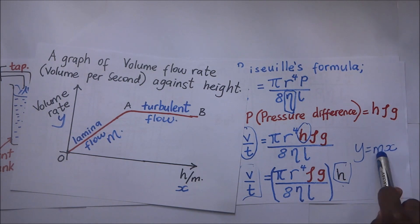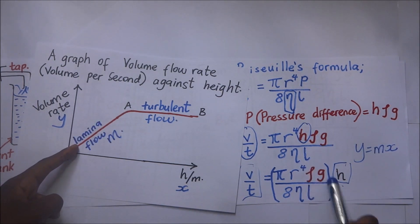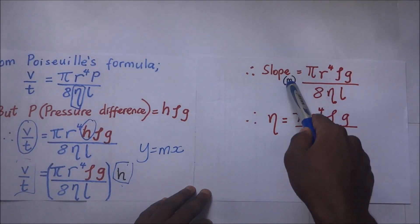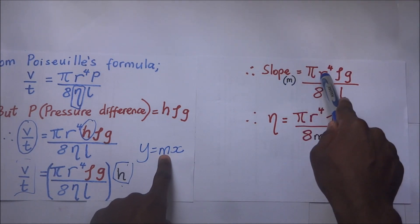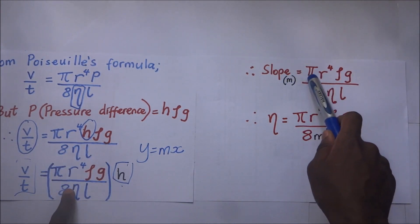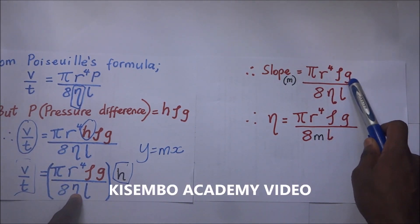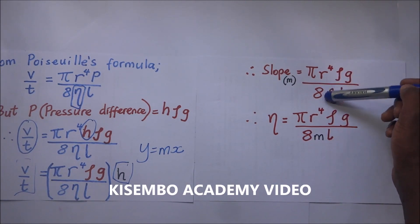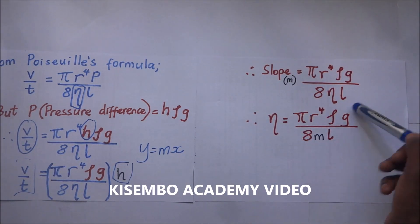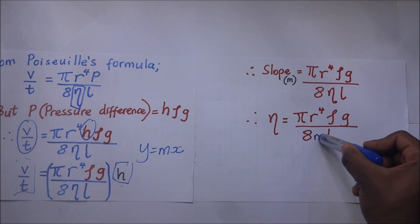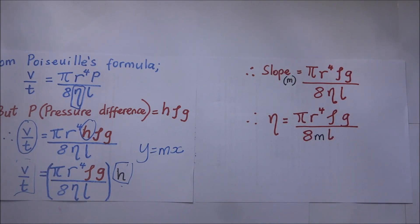So we equate the slope m to πr⁴ρg / (8ηl). Making the coefficient of viscosity η the subject of the formula, we can solve for η. That is how we find the coefficient of viscosity using Poiseuille's formula.